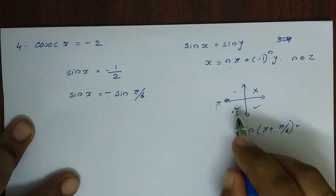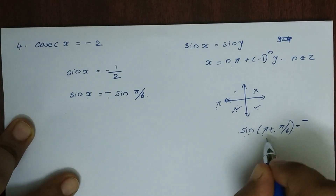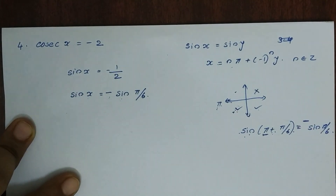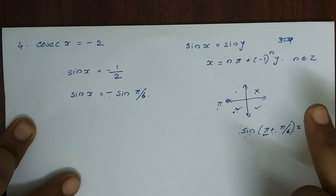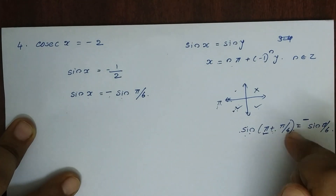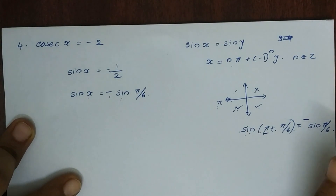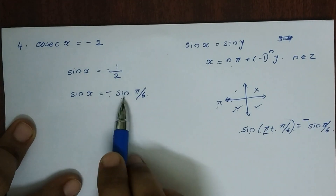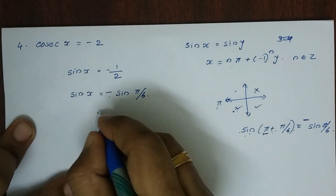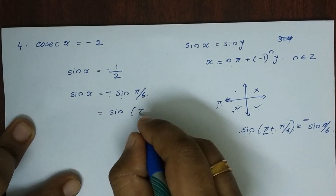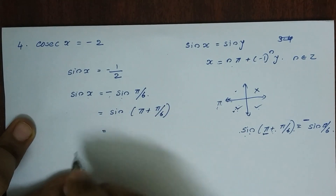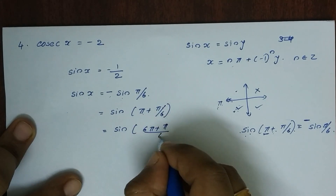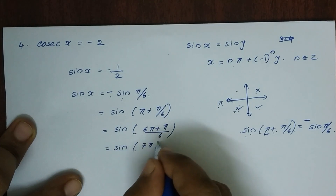This is the third quadrant, where sin is negative. We can write minus sin(π/6) as sin(π + π/6). So sin(π + π/6) equals sin(7π/6).